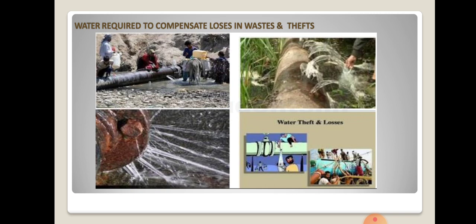Next is water required to compensate for losses due to wastage and theft. In a public water supply scheme, there may be loss of water. The distribution system consists of various pipelines connected from the reservoir to households, and there may be leakages in these pipes. There may also be theft of water, especially from public water lines, where people try to take water for various other purposes like agriculture and irrigation. An allowance must be made for these losses.